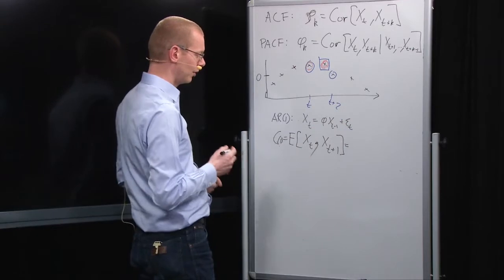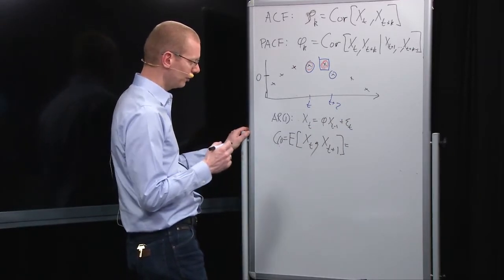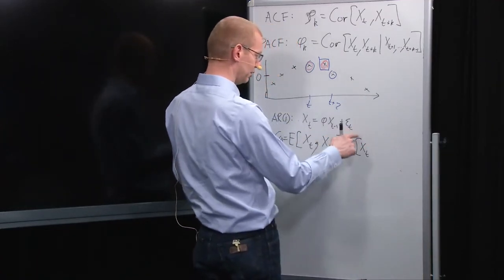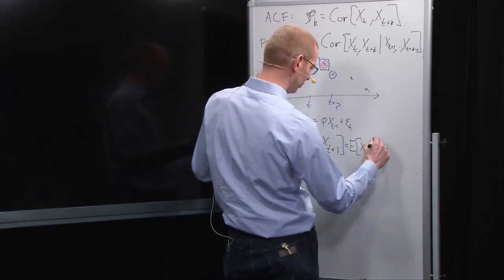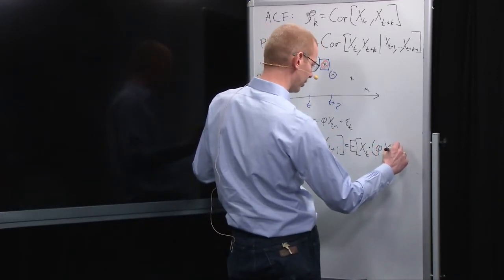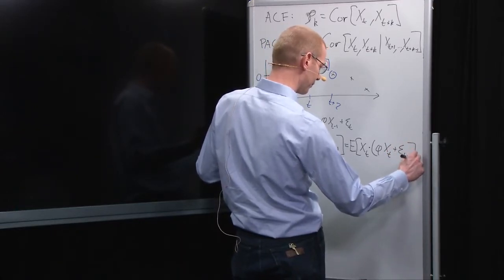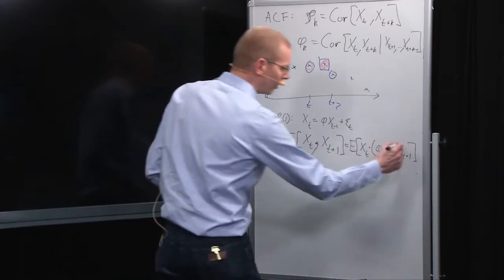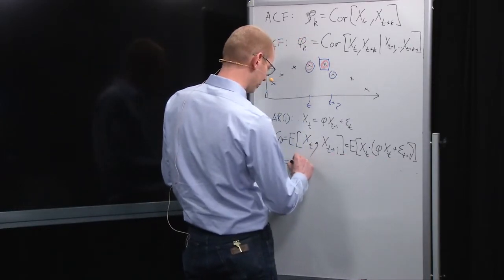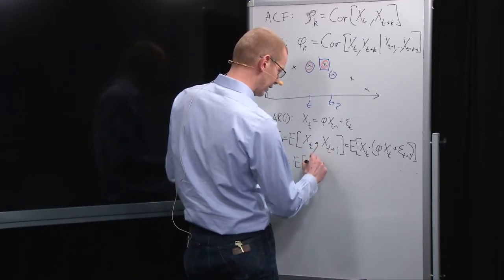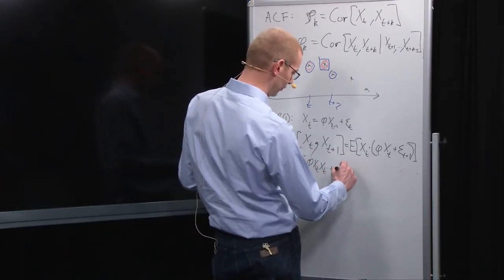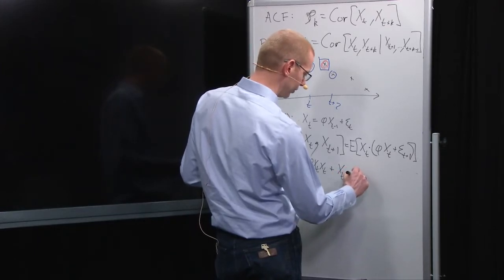And if we insert what we have up here, what do we get? Well, we get the expectation of, if we keep x t and insert the expression for x t plus 1, then we multiply by phi, and that plus 1 means we get phi x t plus epsilon t plus 1 here. Now the expectation is a linear operator, so we have the first part here. That's the expectation of phi times x t times x t plus the expectation of x t times epsilon t plus 1.